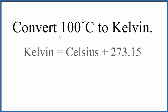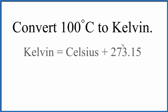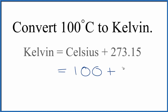Let's convert from 100 degrees Celsius to degrees Kelvin. Here's how you do it — it's pretty simple. We have 100 degrees Celsius, so in Kelvin, that equals 100 degrees Celsius plus 273.15.